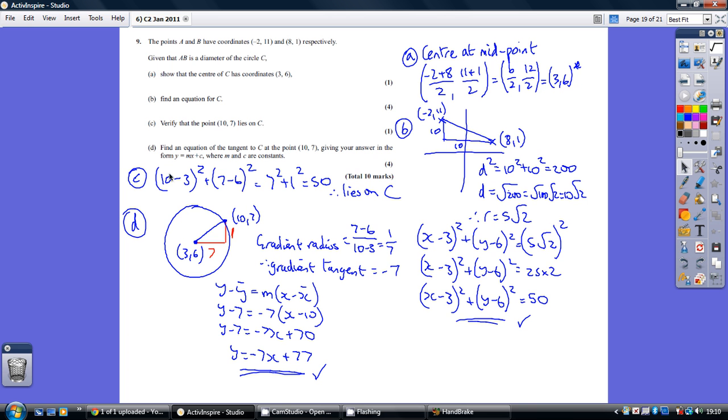Now, for part C, we've just got to show that this point lies on the circle. So, just basically plug this into the equation of a circle and check that you get 50, which we do.